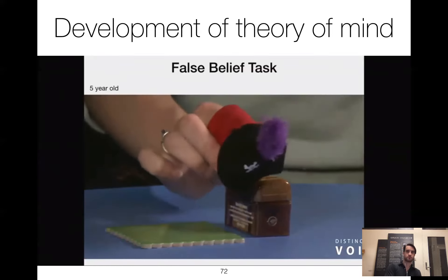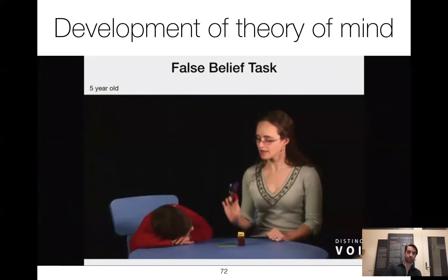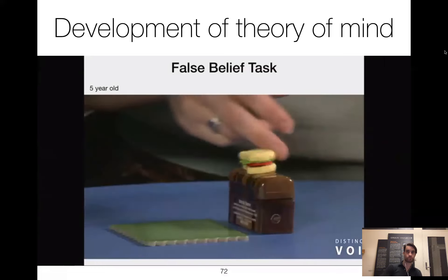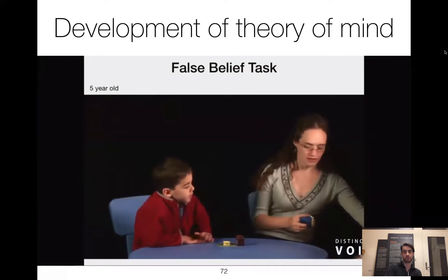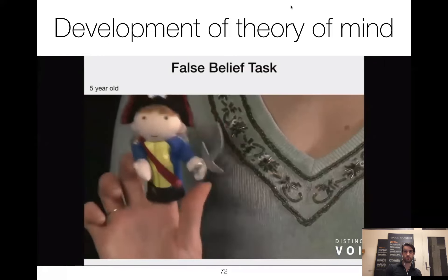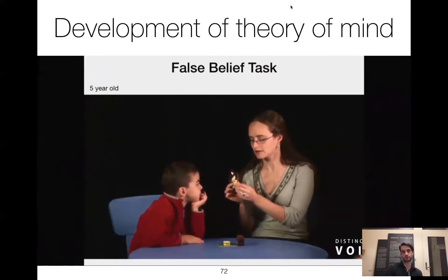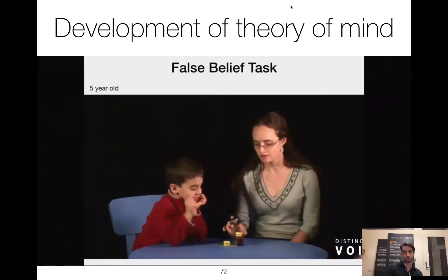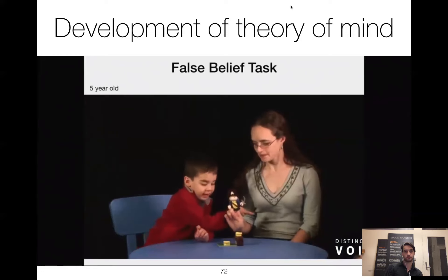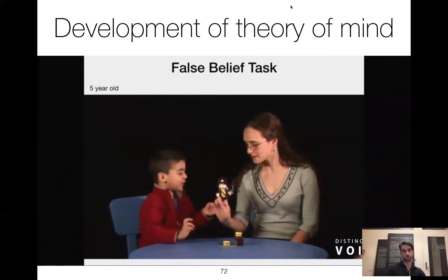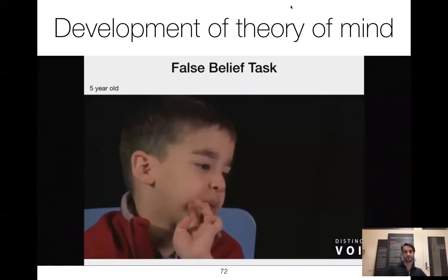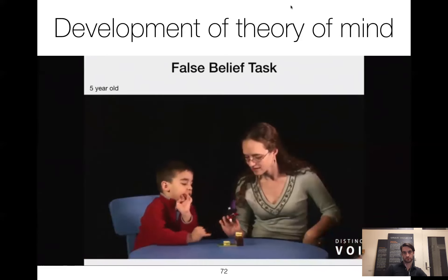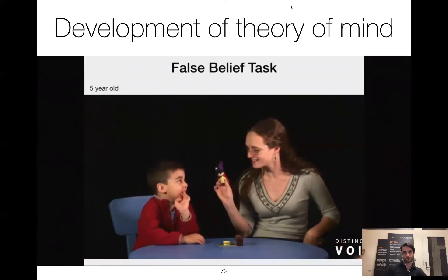Ivan puts his sandwich on top of the pirate chest and goes to get a drink. While Ivan is away, the wind comes and blows the sandwich down onto the grass. Then Joshua, another pirate who also loves cheese sandwiches, puts his cheese sandwich on top of the pirate chest. When Ivan comes back, which sandwich will he take? The five-year-old correctly predicts Ivan will take Joshua's sandwich — the one on the chest — because Ivan doesn't know his own fell on the grass. And that's exactly what happens.